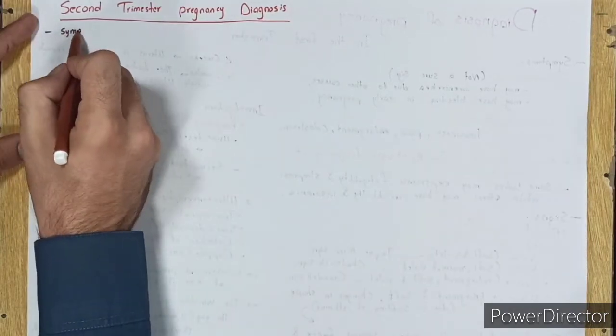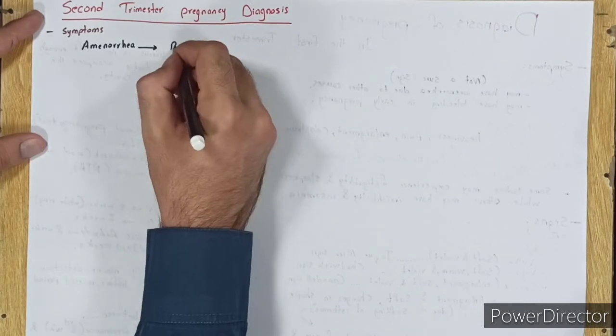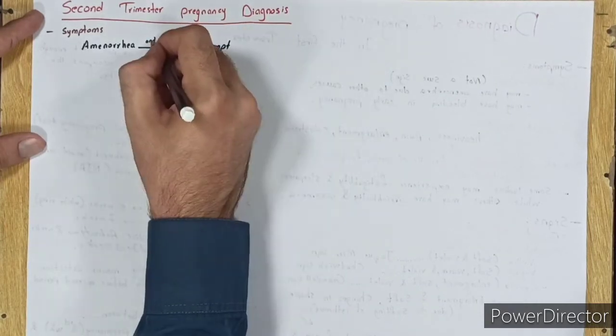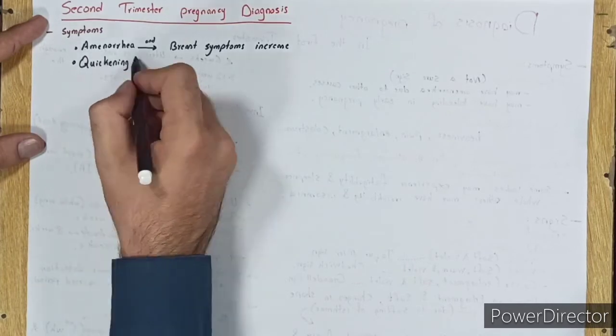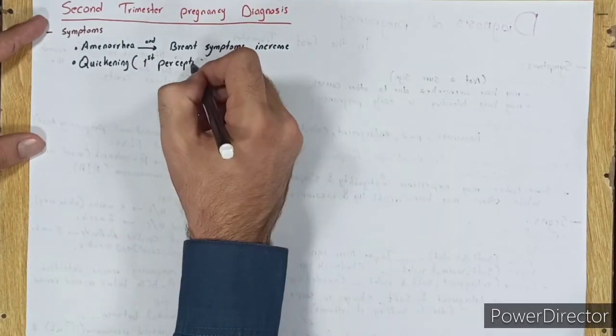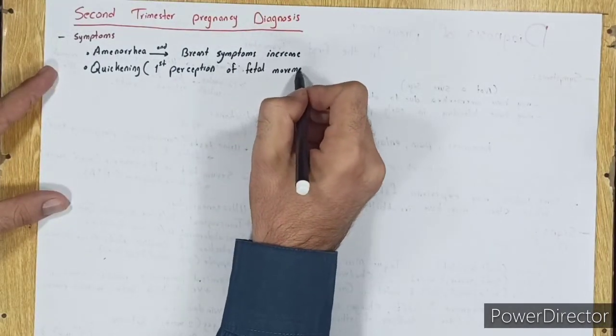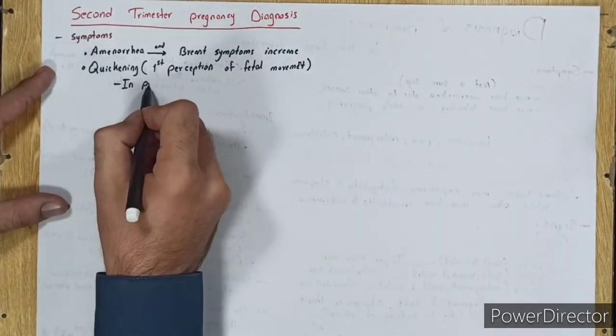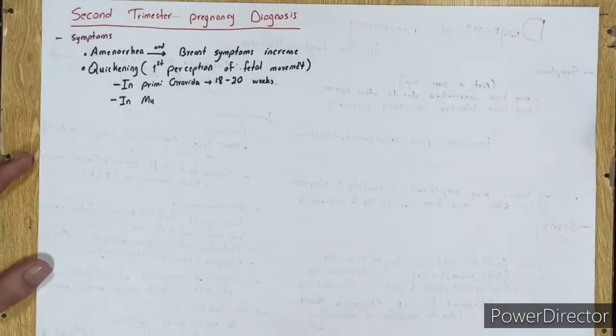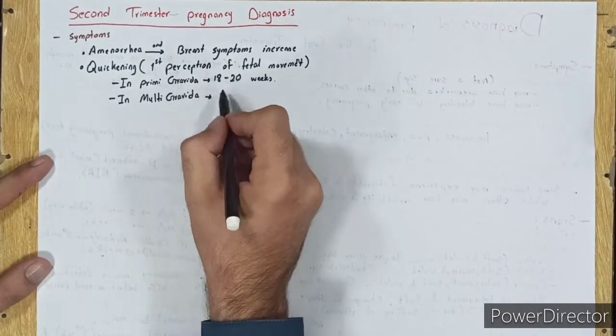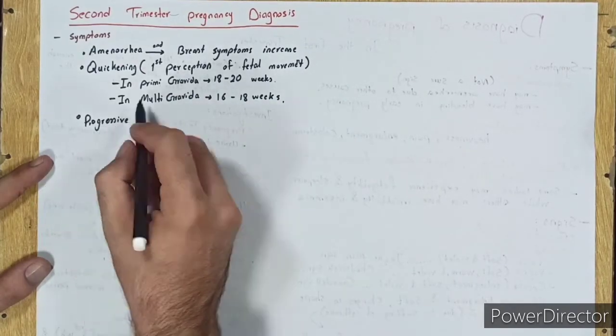Symptoms: Amenorrhea and breast symptoms increase. Quickening, the first perception of fetal movement, occurs in primigravida at 18 to 20 weeks and in multigravida at 16 to 18 weeks. Progressive abdominal enlargement.